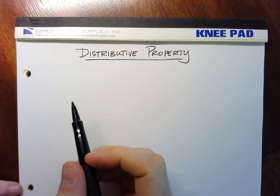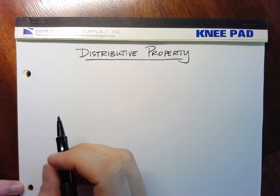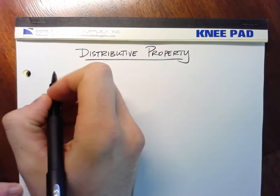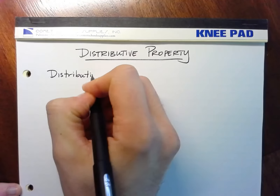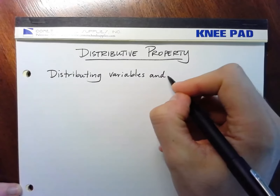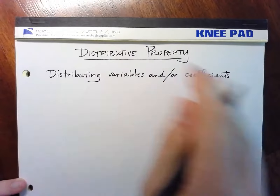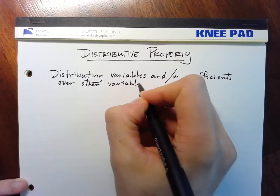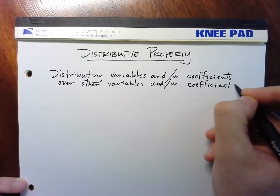Another one of the important and most commonly used properties in algebra is the distributive property. The distributive property has to do with distributing a variable or number over other variables and numbers — distributing variables and/or coefficients over other variables and/or coefficients.